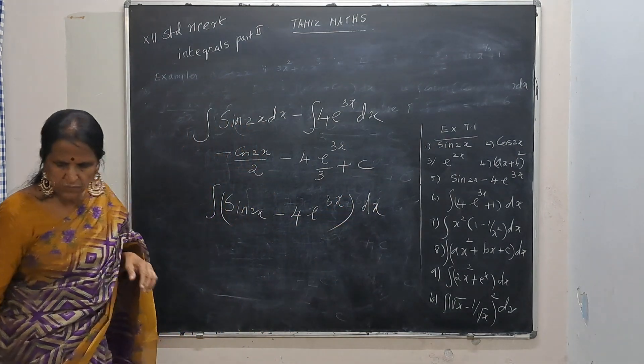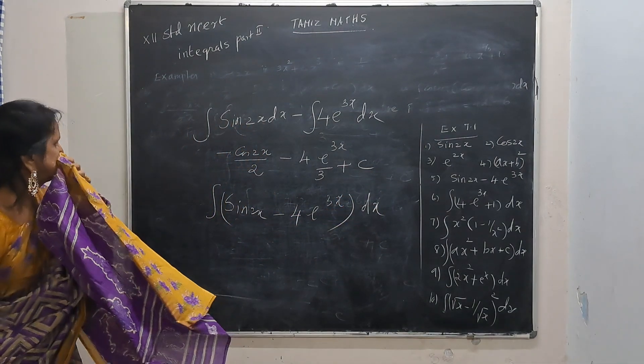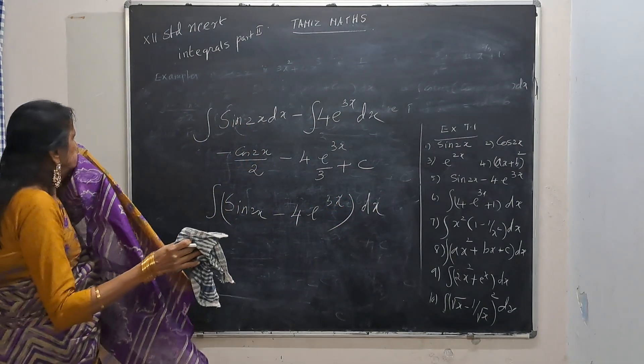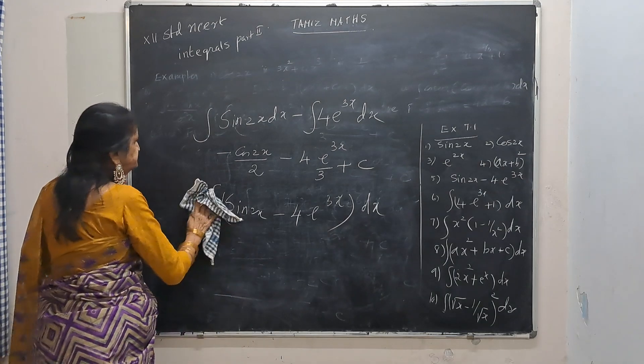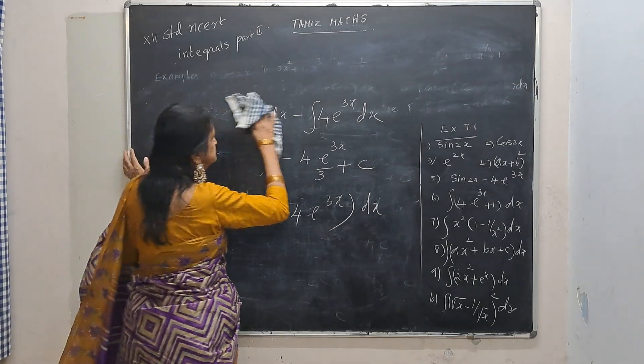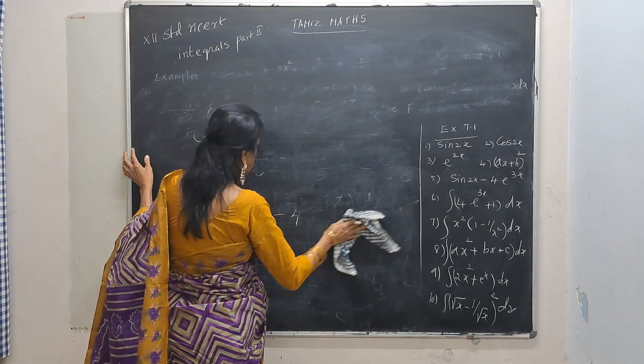The answer for this question is minus cos 2x by 2 minus 4e to the power 3x by 3, plus c.